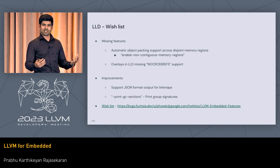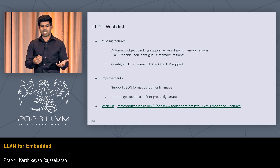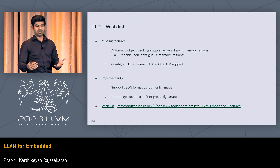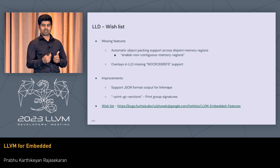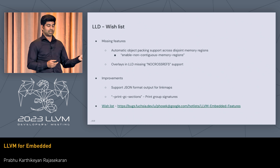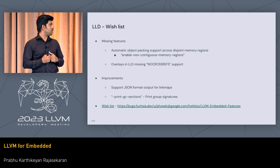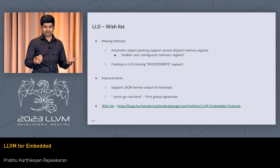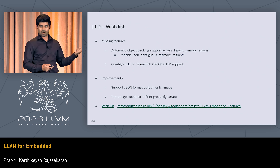Here is our LLD wishlist. One thing I already touched upon is automatic object packing support. The BFD linker has a flag to enable non-contiguous memory regions, which is supposed to work seamlessly — this support does not exist with LLD today, and we would really like to see it implemented. Another feature used heavily in the embedded space is overlays, which can be used to save binary size. A key component for overlays to work correctly is no-cross-ref support, which is missing in LLD and which we want to prioritize. Other improvements include a machine-readable format for link maps, which would make comparing with GNU format link maps easier. We also have a whole bunch of other bugs filed against LLD — the wish list is available for you to check out.